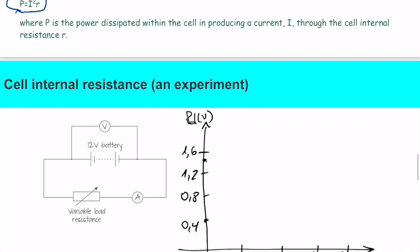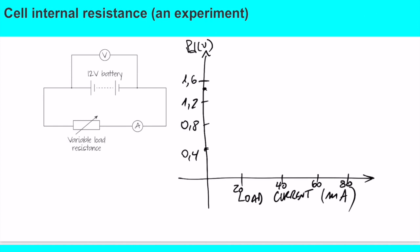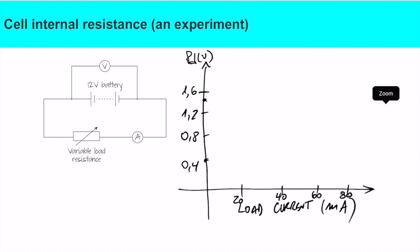We do an experiment in class. Basically, we have a variable resistor that is varying the current through a very simple circuit, and we're measuring the current and voltage. We will notice that as we increase the current by decreasing the resistance, we might have a curve that should be approximated to a straight line showing how the potential difference drops. This would be the result of this simple experiment.